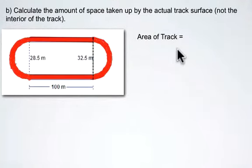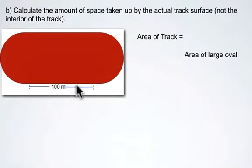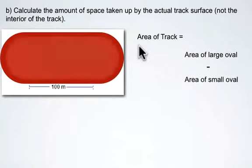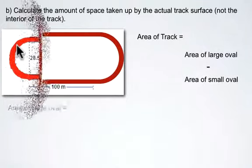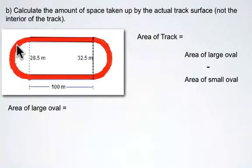So first let's calculate the amount of space taken up by the actual track. That is the question. To do so, we need to find out what the area of the large oval is, so the entire track itself, and from that we need to subtract the area of the small oval, which is the white portion here, the interior of the track.